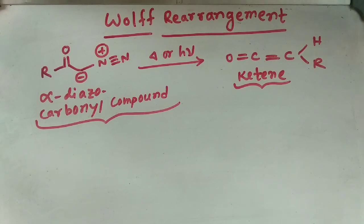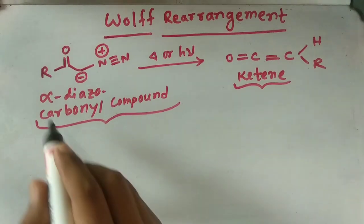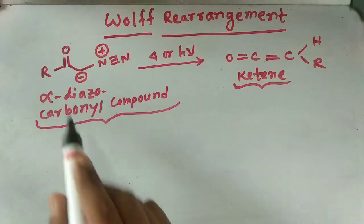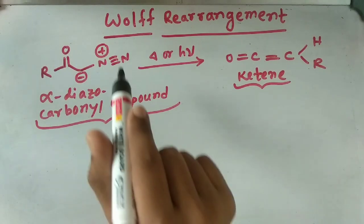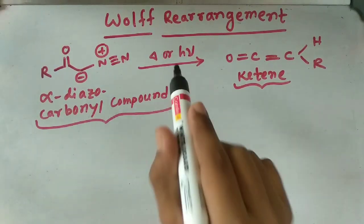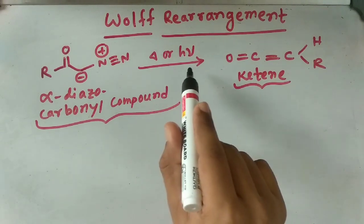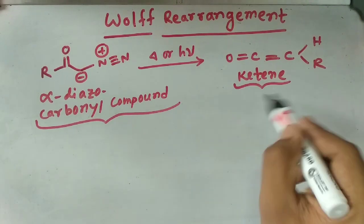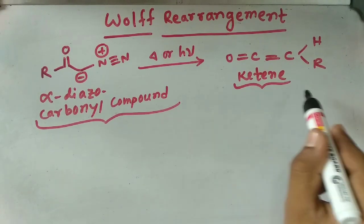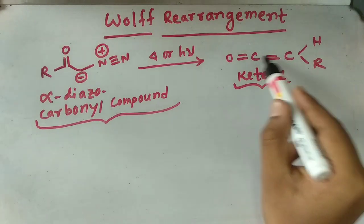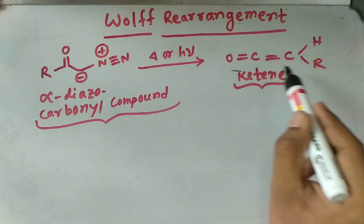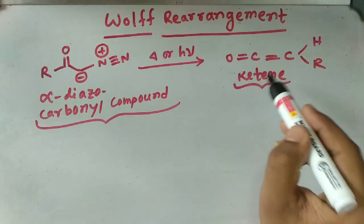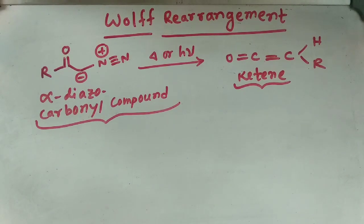This kind of rearrangement actually occurs when an alpha diazo carbonyl compound — that is, a compound with a carbonyl group at one position and a diazo system attached at the alpha position — is treated with heat or light. The product that is formed is a ketene, which is C double bond C double bond O, combining an alkene and a carbonyl.